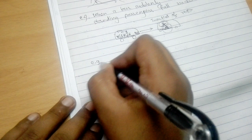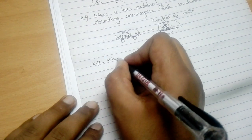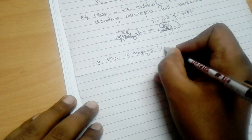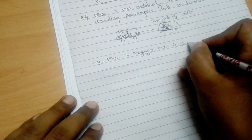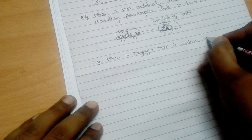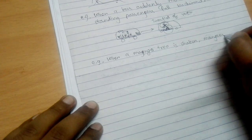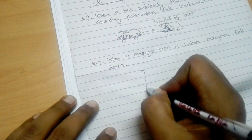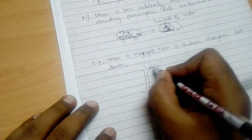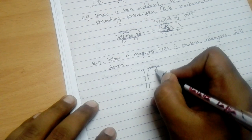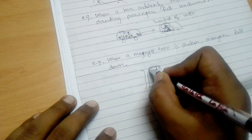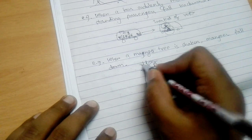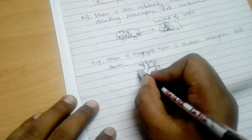We just discussed inertia of rest and some applications of inertia of rest in daily life. Now let's move to inertia of motion. Inertia of motion means: unless an external force is applied, an object in motion remains in the state of uniform motion.